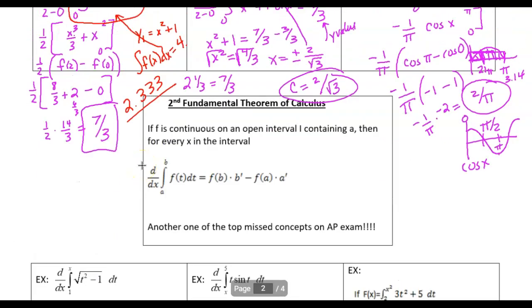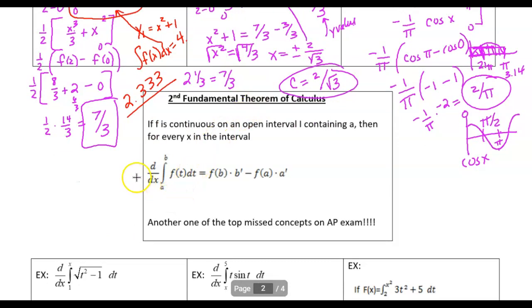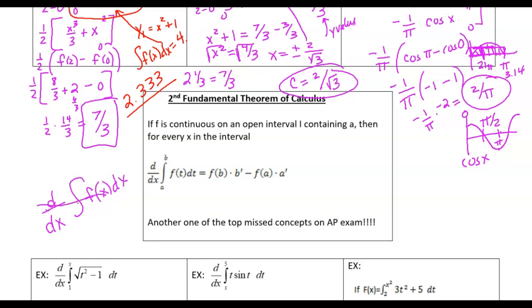The next rule is the Second Fundamental Theorem of Calculus. I went through this on 6.2 or 6.3 — when we had to take the derivative of an integral, we just ended up with the original function because they were inverse functions, and the derivative and integral canceled out. That concept is true, but that was before we reintroduced the whole idea of u-substitution. If this was just a simple power rule function, that would be great, but we can have more complex functions.